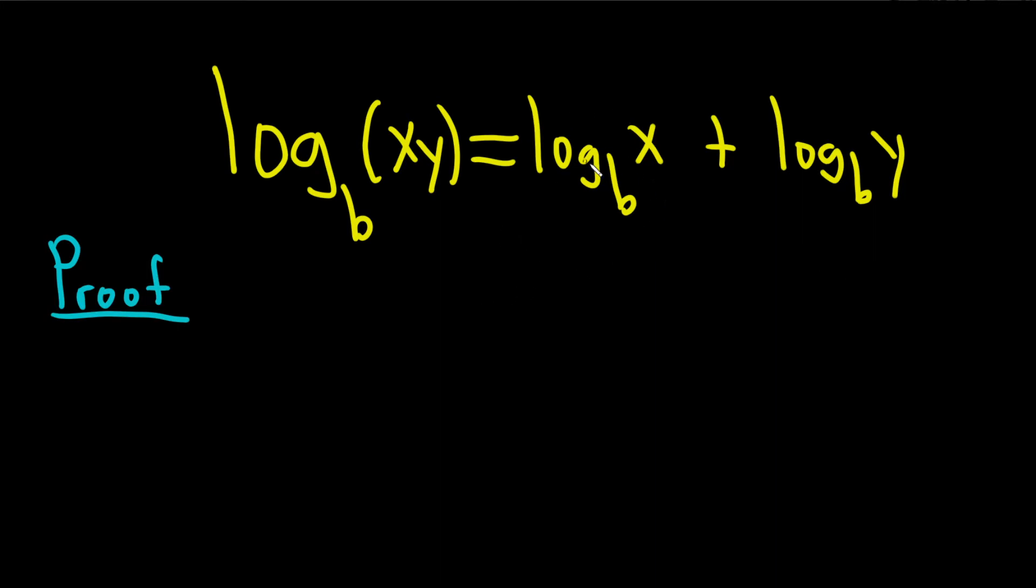We'll start by giving these names. I'm going to call the first one m, so m is log base b of x, and then I'll call the second one n, so n is log base b of y. Then we're going to take each of these and convert these logarithmic equations into exponential ones.